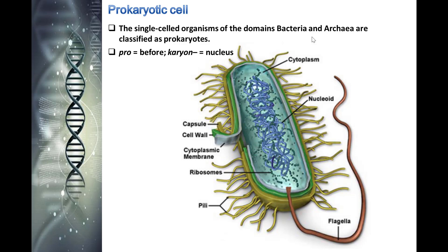The cytoplasm is very similar to eukaryotic cytoplasm except that it doesn't contain organelles. Ribosomes are smaller and have a slightly different shape and composition than those found in eukaryotic cells. Flagella and pili are protein-based filaments found on the outside of prokaryotic cells, which are used for locomotion and conjugation to exchange genetic material.